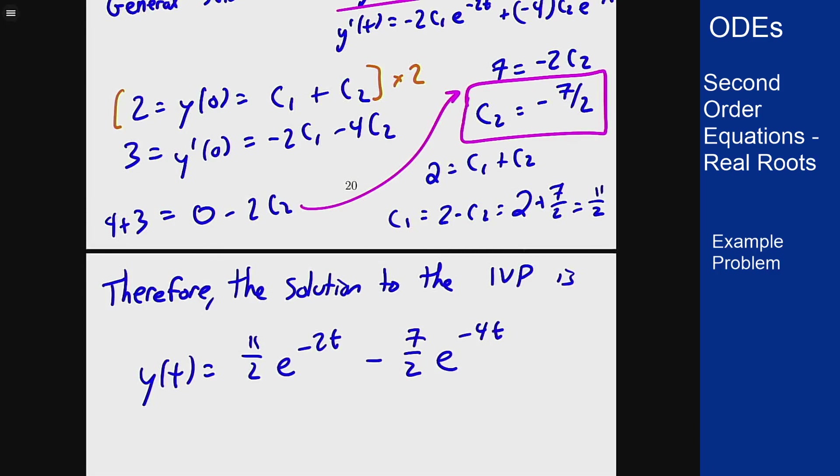If you plug in 0 here you do in fact get 2, which is 11 halves minus 7 halves. Take the derivative, you get negative 11 on the first term and we'll end up with a plus 14 on the second term, resulting in a 3. So this in fact does solve the differential equation and meet the initial conditions, so it is the solution of the initial value problem here.